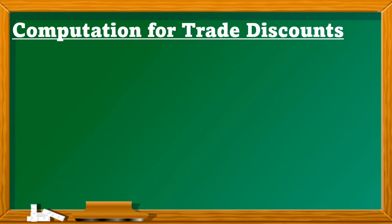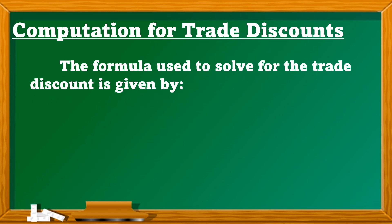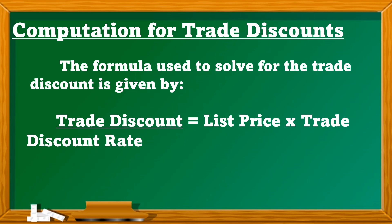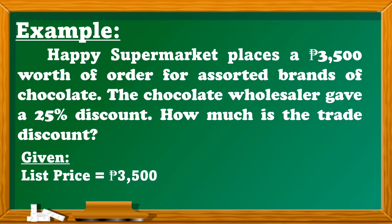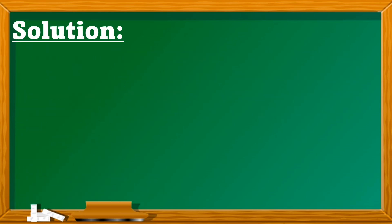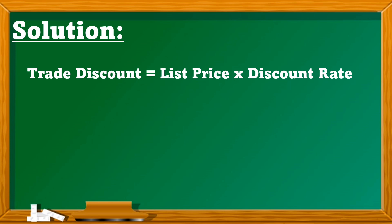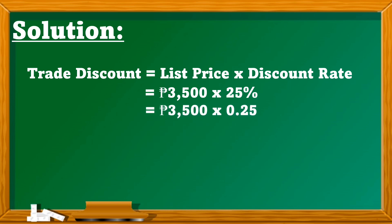How to compute for the trade discount. The formula is: Trade discount = List price × Trade discount rate. Example: Happy Supermarket places a 3,500 pesos worth of order for assorted brands of chocolate. The chocolate wholesaler gave a 25% discount. How much is the trade discount? Solution: 3,500 × 25% = 3,500 × 0.25 = 875 pesos.